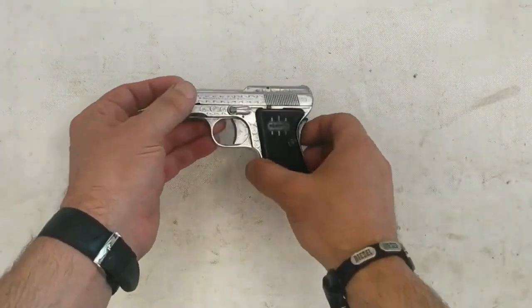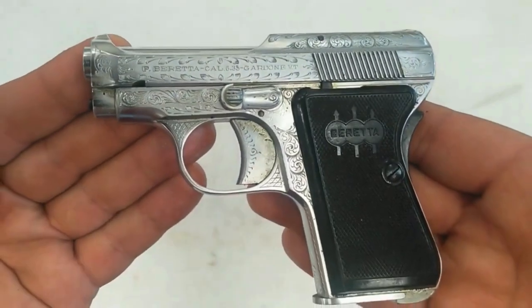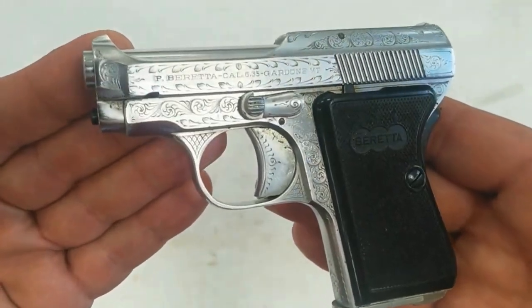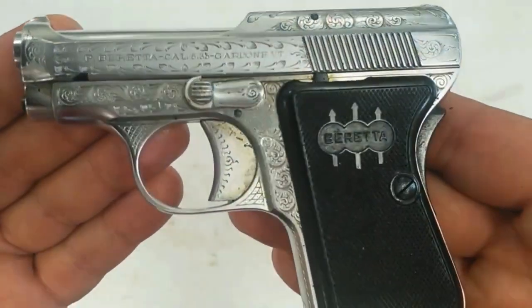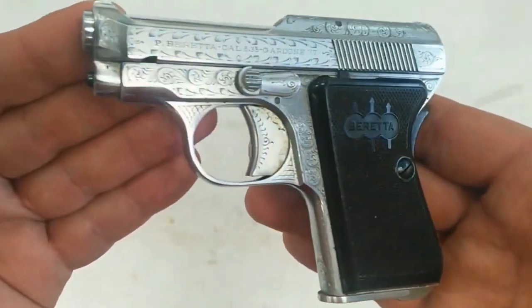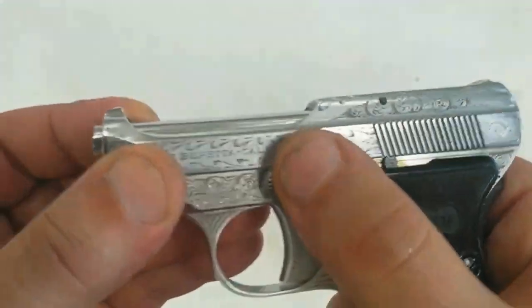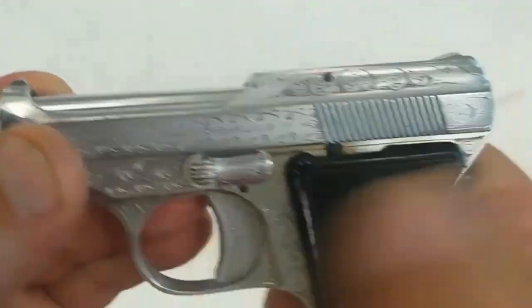The Beretta M418 is an easily concealed Italian .25 auto pocket pistol. The slightly improved model 418 replaced the 318 pattern in 1947. Changes included a more rounded plastic grip, a reshaped grip safety, and an indicator pin in the slide which protruded when a cartridge was chambered.